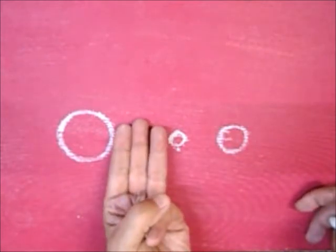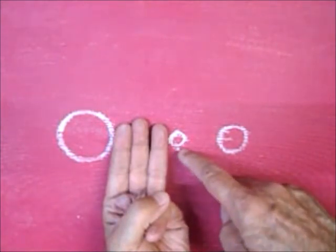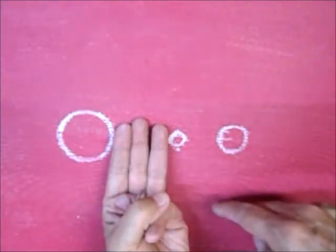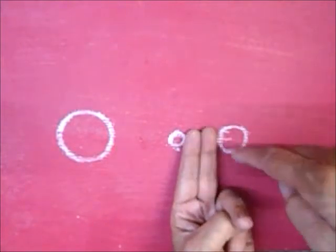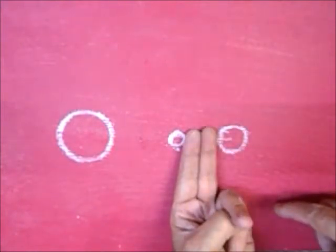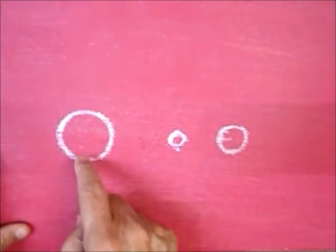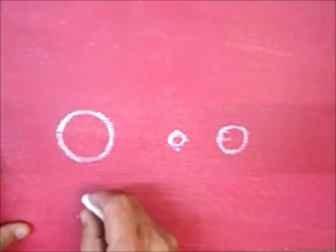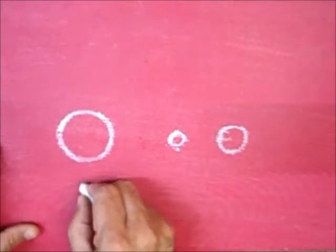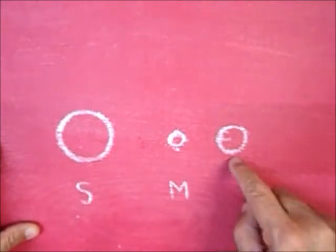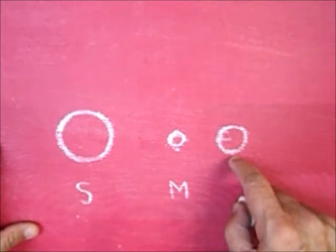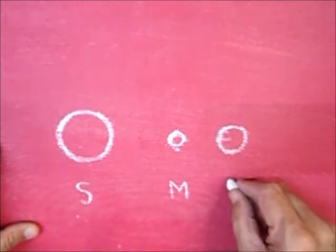The distance between the first and second circle should be three finger widths, and between the second and third should be two finger widths. The biggest circle represents the Sun, the smallest represents the Moon, and the intermediate circle represents the Earth.